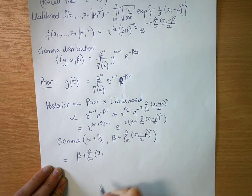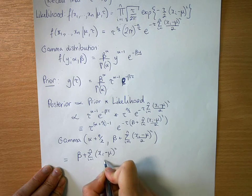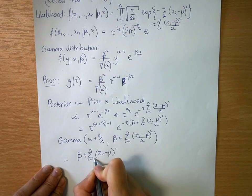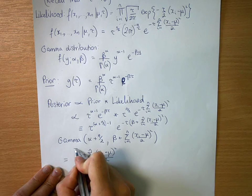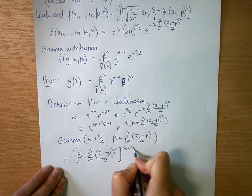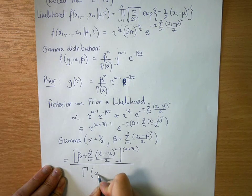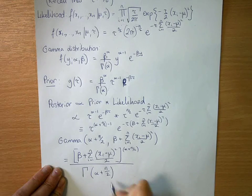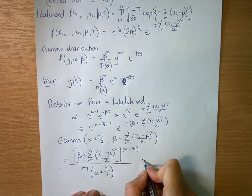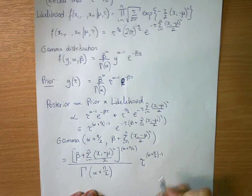So that is [β + Σ(xᵢ-μ)²/2]^(α+n/2), and all that to the power of α + n/2, divided by the gamma function of α + n/2. And we have τ^(α+n/2-1)...